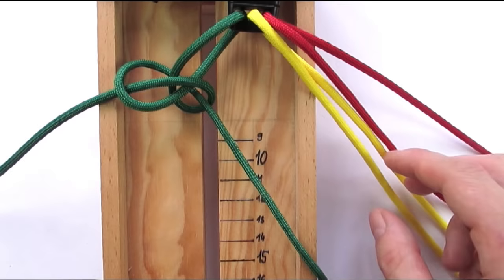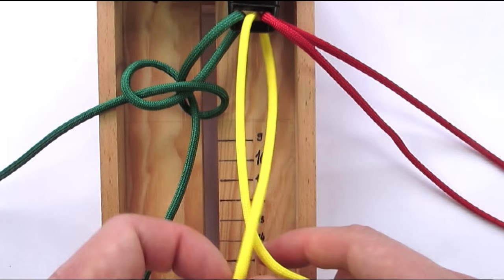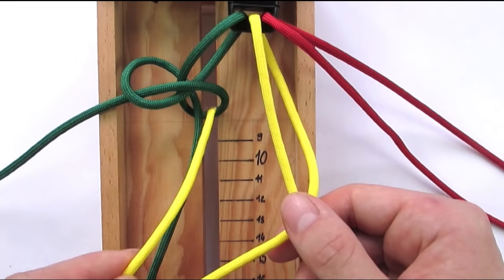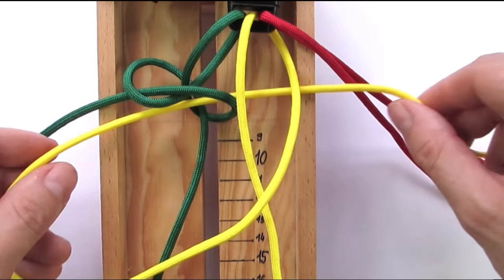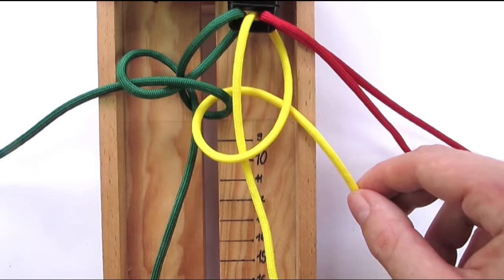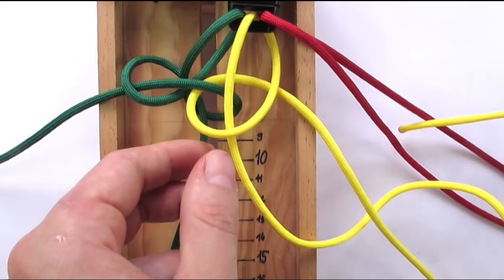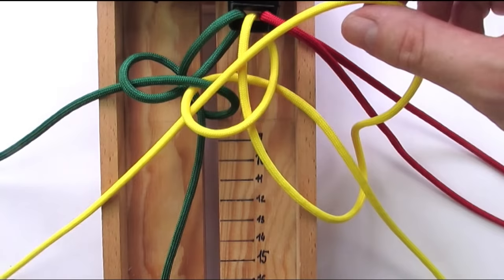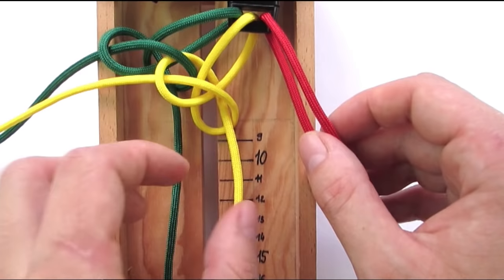We're now going to take the cords of the second color, take the right end which again is under the buckle, go over the left end, then through the right loop of our first knot, and under everything. We're now going to take our left end, go under the right end, then over everything, and into the loop on the left. With this we have tied our second snake knot, and we're now going to move on to the third color.